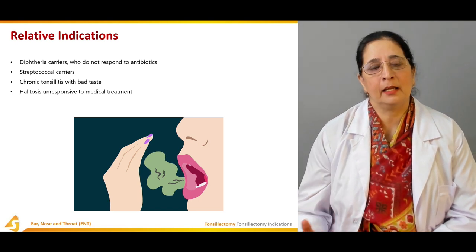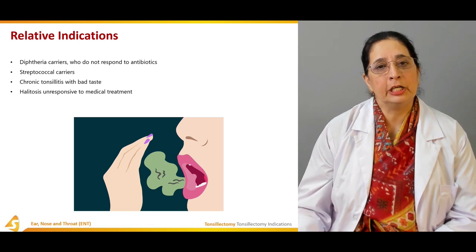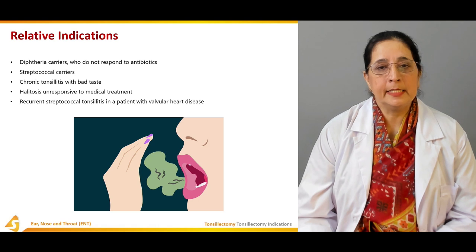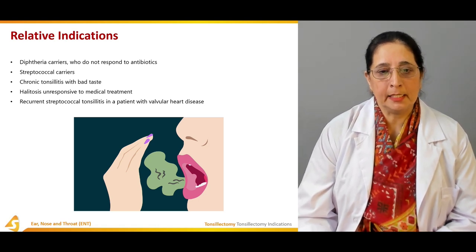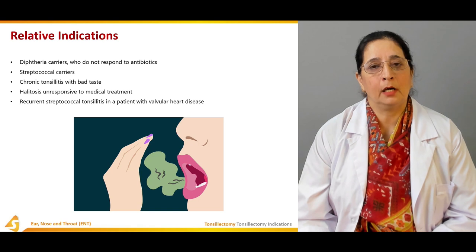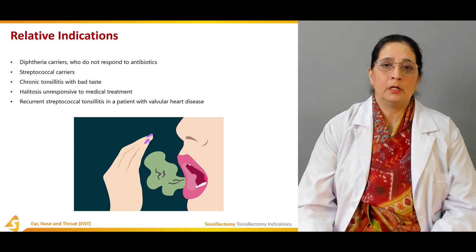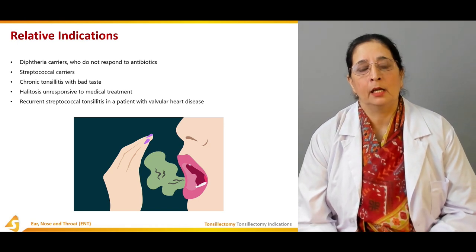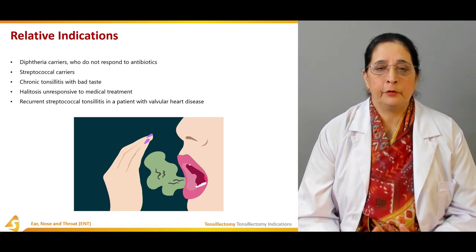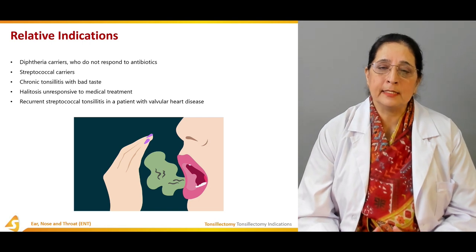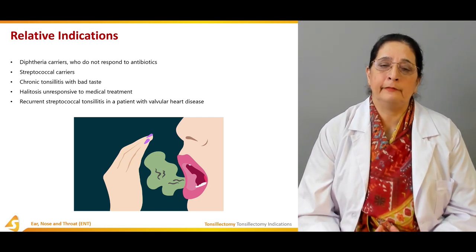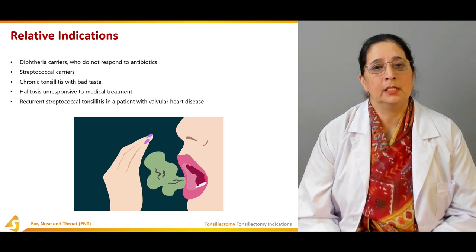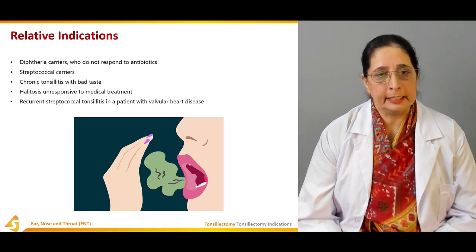Tonsillectomy is also a relative indication for recurrent streptococcal tonsillitis in a patient with valvular heart disease, because the complication of strep throat can be rheumatic fever which affects the valves of the heart and can cause a murmur. So recurrent streptococcal infection in this context is also a relative indication.